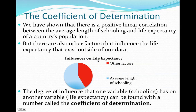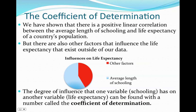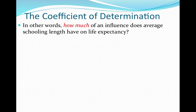The degree, or how much, influence that one variable has on another variable — in this case, the degree of influence that schooling has on life expectancy — is a number called the coefficient of determination. We can arrive at a numerical value that is a measure of how much the x variable influences the y variable. How much of an influence does average length of schooling have on life expectancy, given all the other factors that exist?